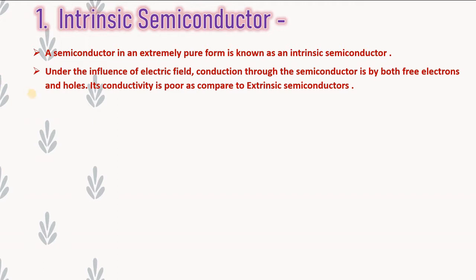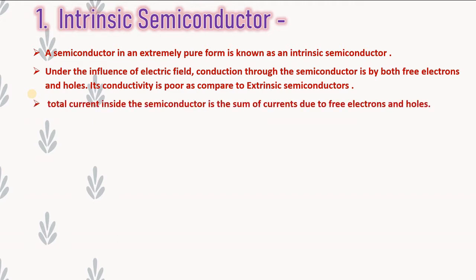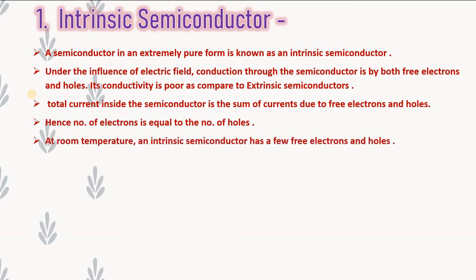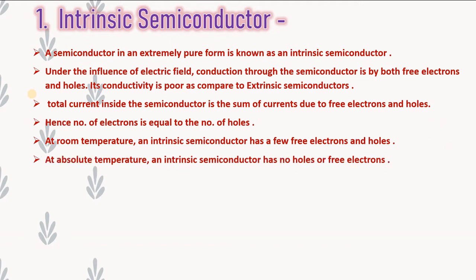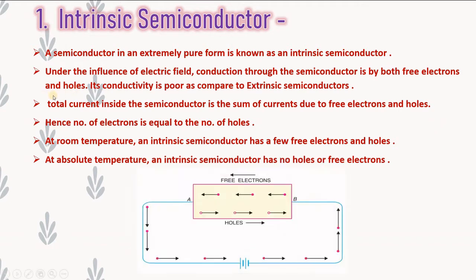As we studied earlier, conduction through a semiconductor takes place by both free electrons and holes. The total current inside a semiconductor is the sum of the current due to free electrons and holes. Hence the number of electrons is equal to the number of holes. At room temperature, an intrinsic semiconductor has very few free electrons and holes, but at absolute temperature it has no holes or free electrons and hence acts as an insulator.